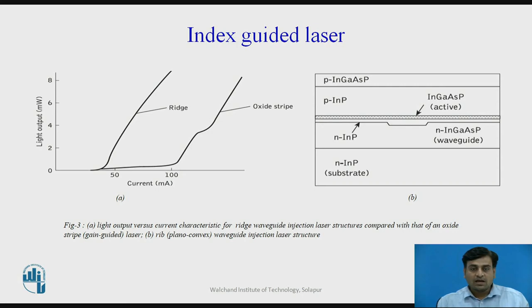Figure 3A compares the light output current characteristics for a ridge waveguide laser with that of an oxide strip gain guided device. Alternatively, the application of a uniformly thick planar active waveguide can be achieved through lateral variations in the confinement layer thickness or the refractive index.